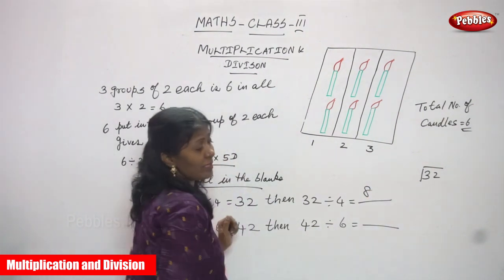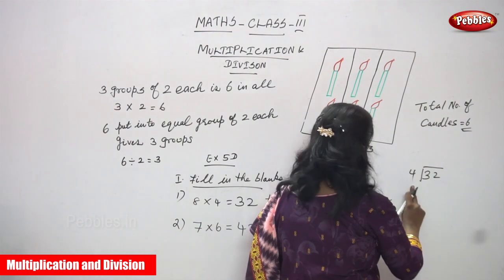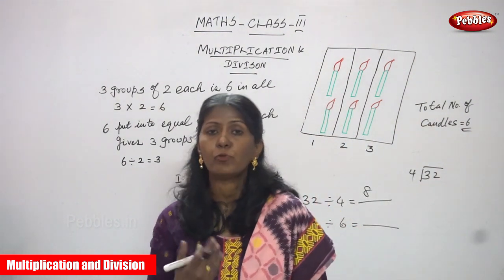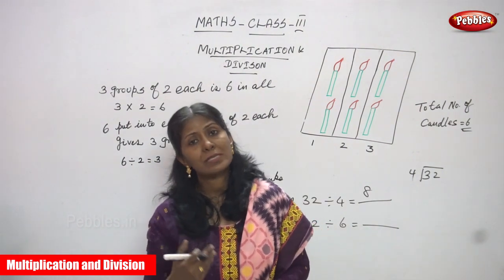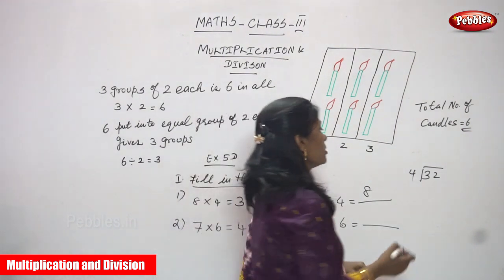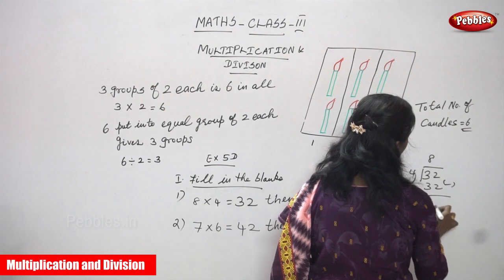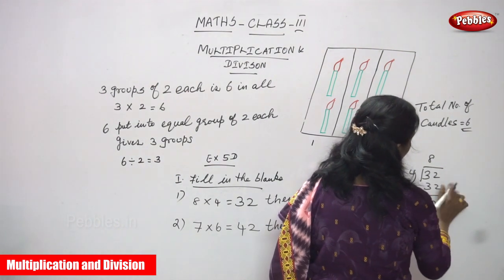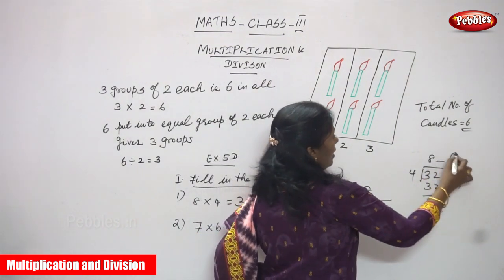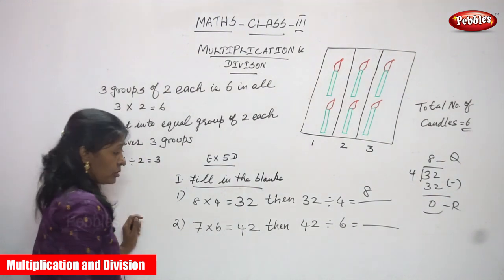To verify: thirty-two divided by four — say the fourth table: four ones are four, four twos are eight, four threes are twelve, four fours are sixteen, four fives are twenty, four sixes are twenty-four, four sevens are twenty-eight, four eights are thirty-two. So the quotient is eight. Thirty-two minus thirty-two gives zero, so the remainder is zero and quotient is eight. The answer is confirmed: eight into four is thirty-two, and thirty-two divided by four is eight.